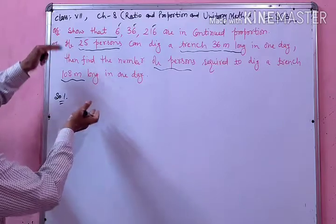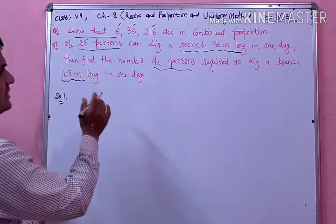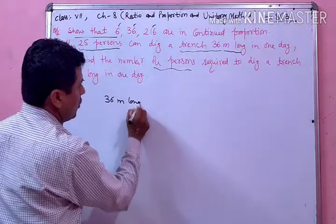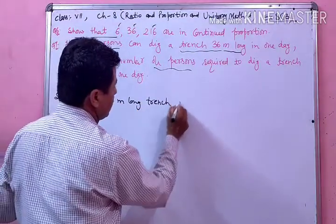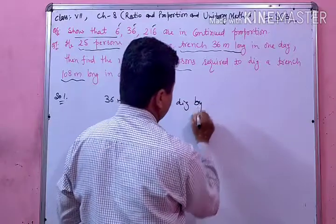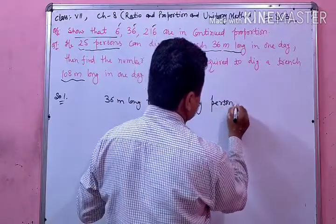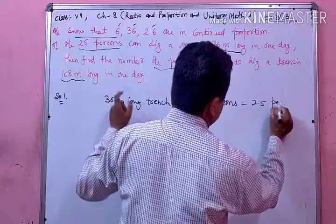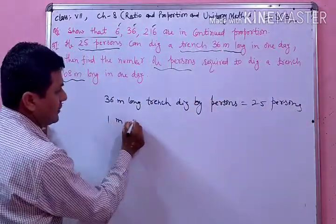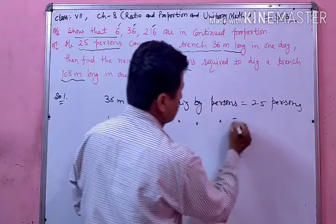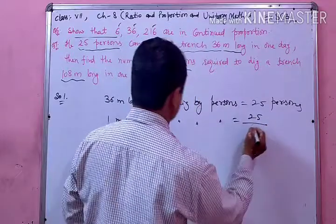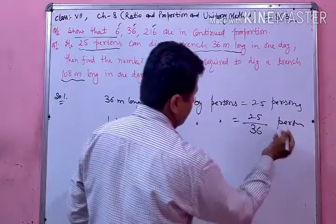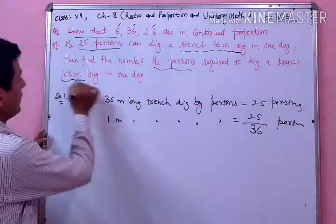इस statement के according solution ऐसे start करेंगे: 36 meter long trench dig by — कितने persons ने खोदा है — 25 persons ने। इसी दर से 1 meter long trench dig by persons — कम होगा तो divide करेंगे, 36 से divide कर देंगे।